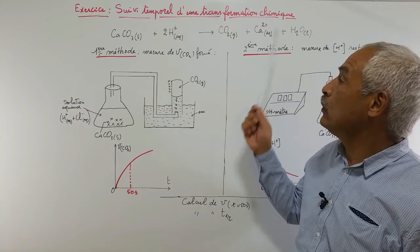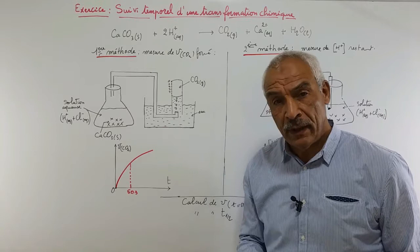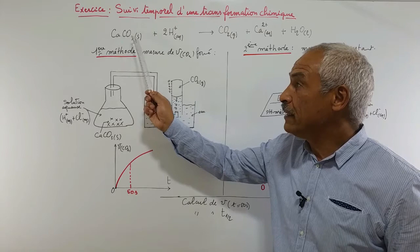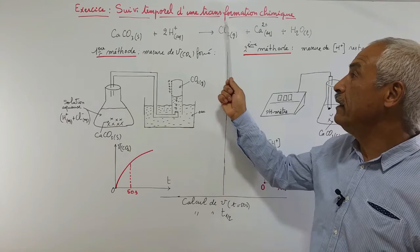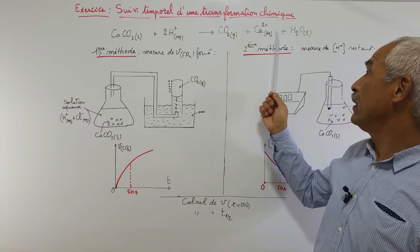Dans cet exercice sur le suivi temporel d'une transformation chimique, nous allons faire le suivi d'une transformation chimique qui se passe entre le carbonate de calcium solide et les ions H+ d'une solution aqueuse d'acide chlorhydrique. Cette réaction donne comme produits le CO2 gazeux, des ions Ca2+, et de l'eau liquide.